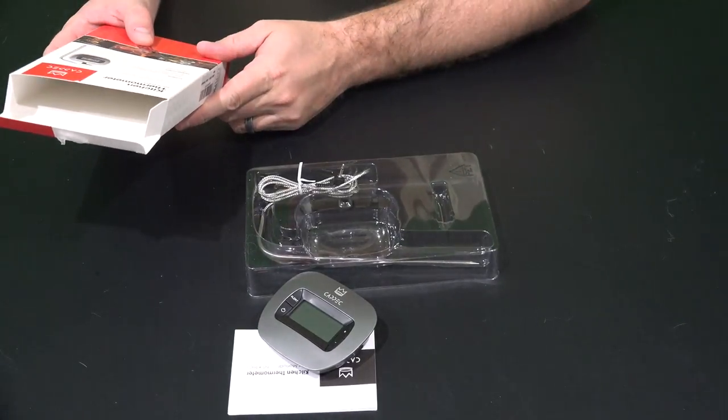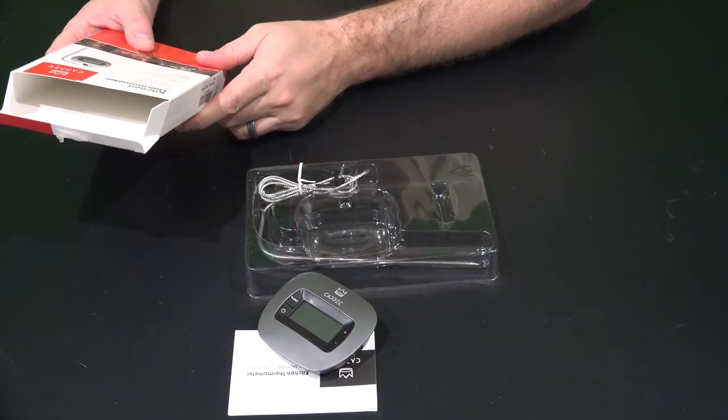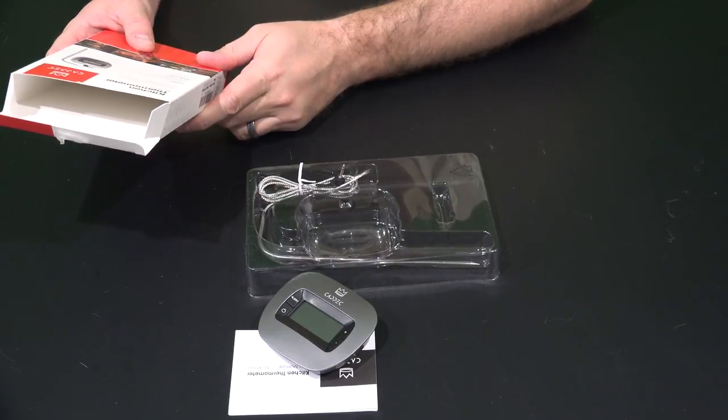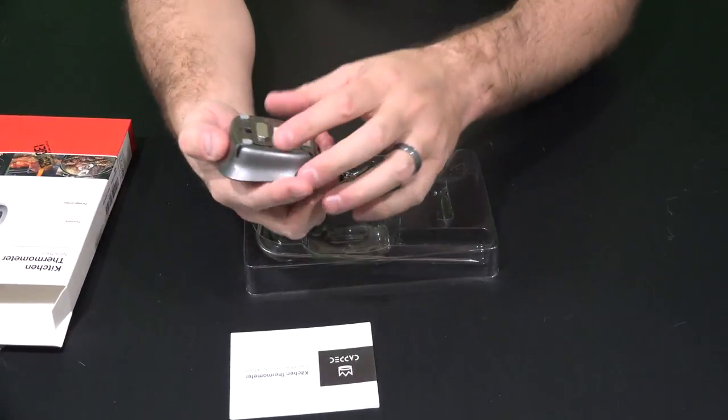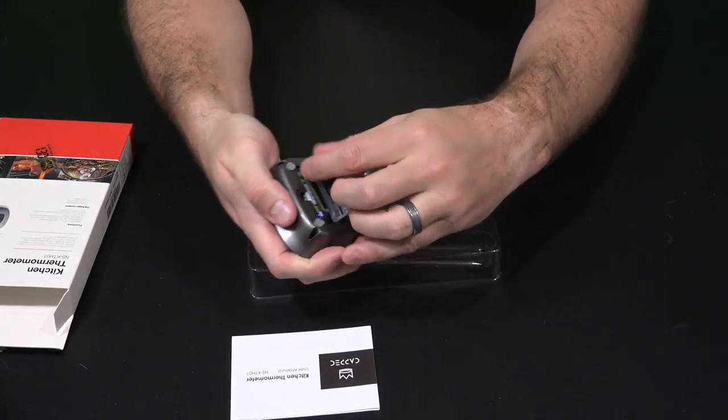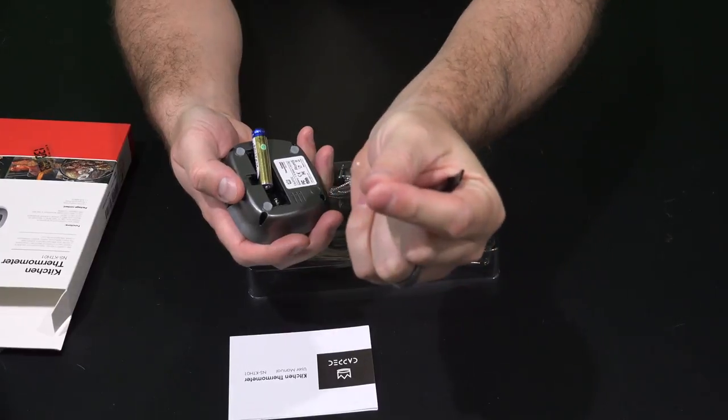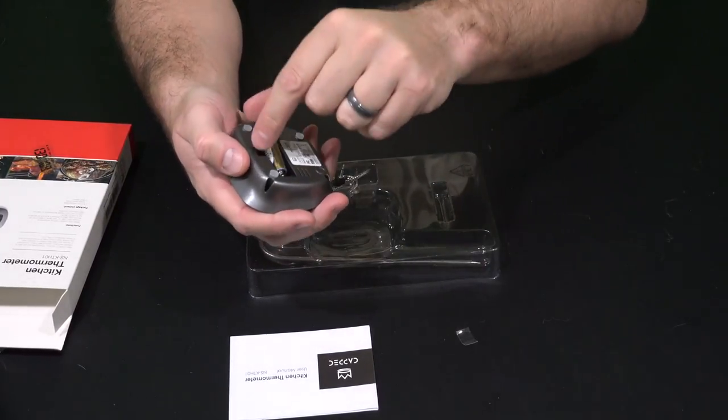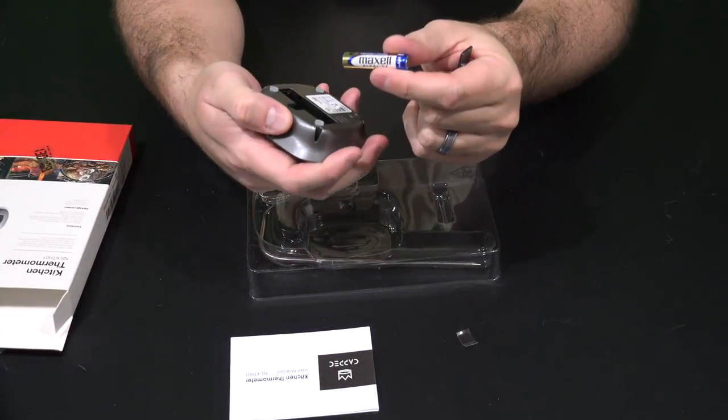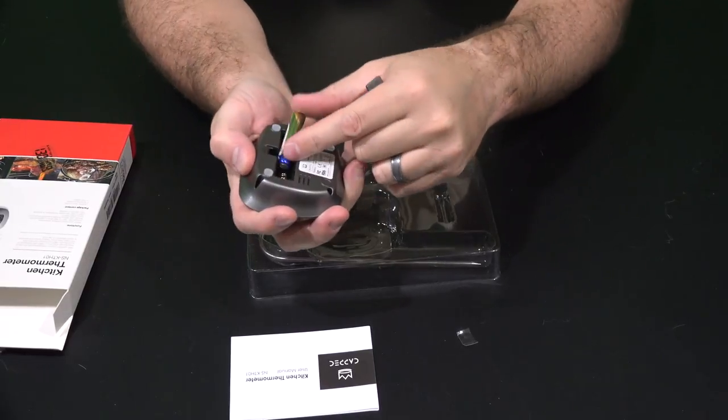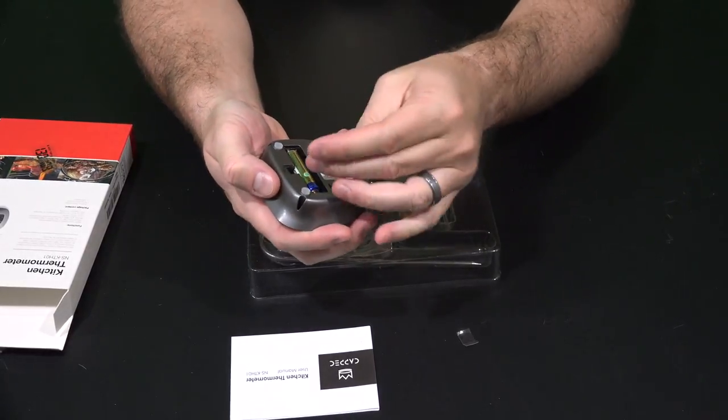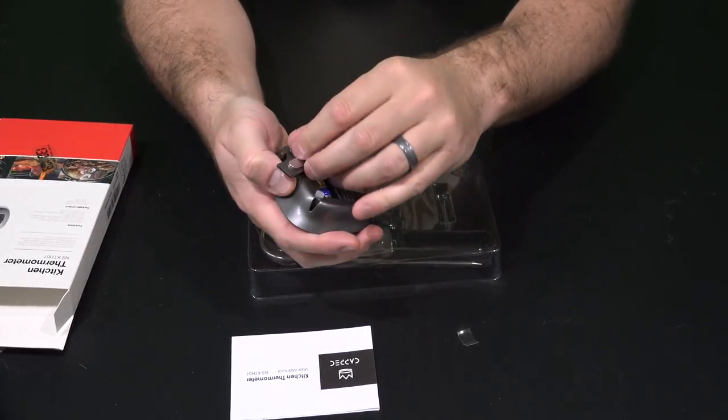It says package contents: one kitchen thermometer, one temperature probe, one AAA battery. Oh, the AAA battery is already in it and it has a little plastic piece so that you know the battery has not been used. So that's nice. Very easy to get into battery door there.